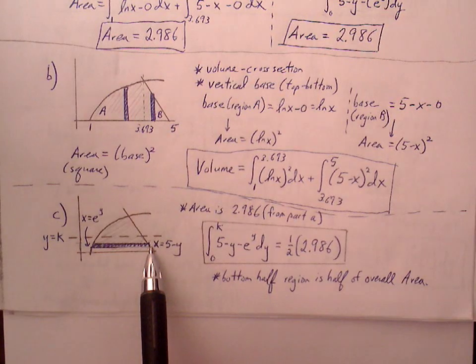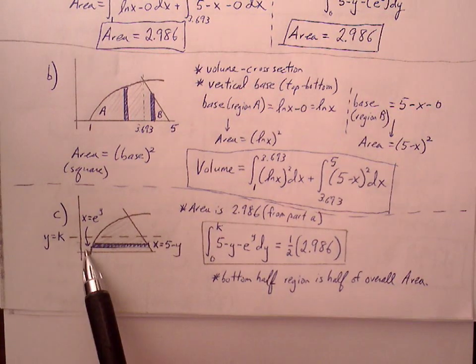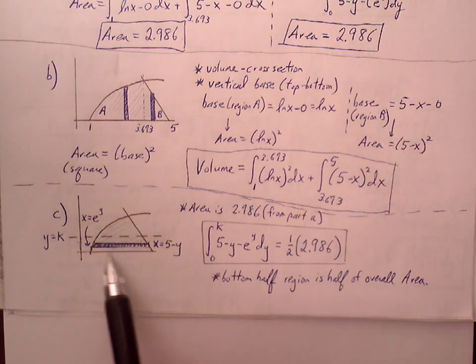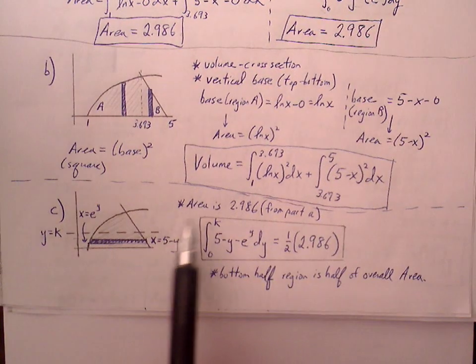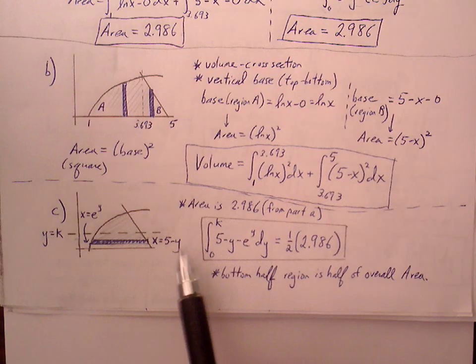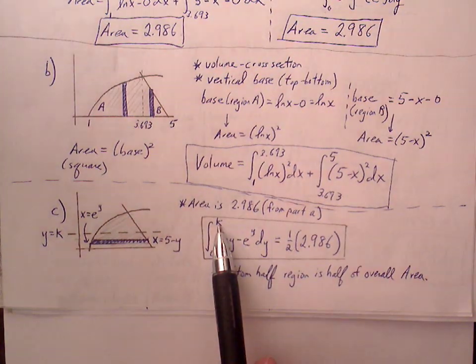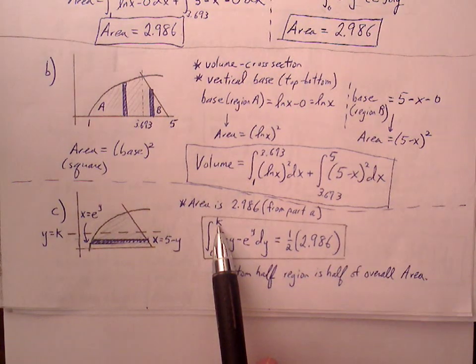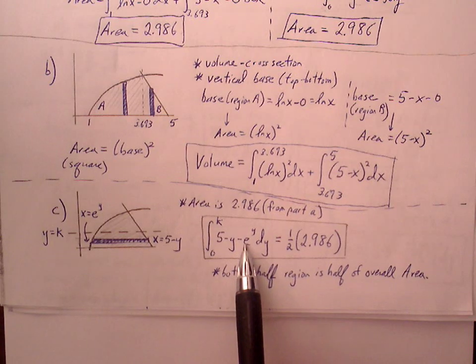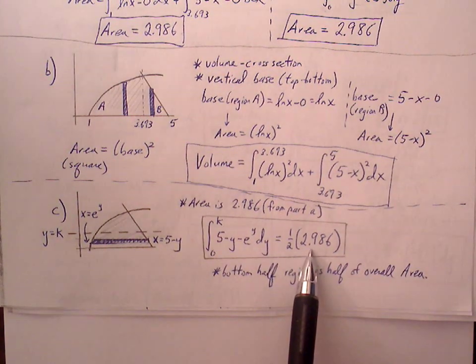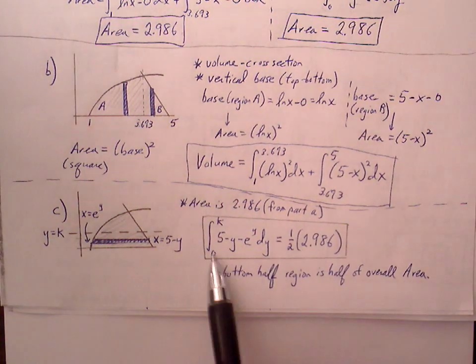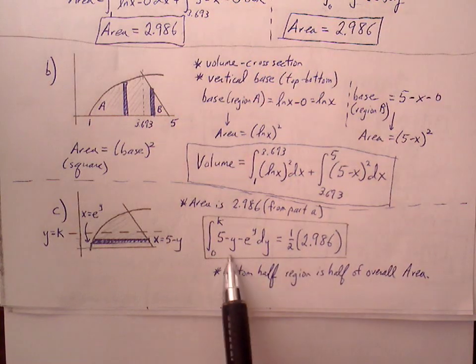We know we're doing right minus left here since we have a horizontal rectangle. Right minus left: right endpoint is 5 minus y, left endpoint is e to the y. We want to go from 0 to K as our bounds. This area will only constitute half of 2.986. So if K is truly the halfway point in terms of splitting the areas in half, then the integral from 0 to K of 5 minus y minus e to the y must equal half the known area from part A. The bottom half region is half of the overall area. This is all we need to represent as our answer.